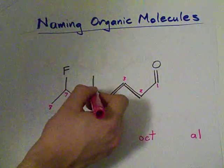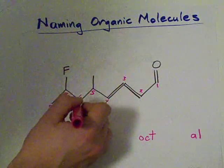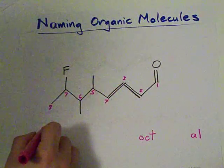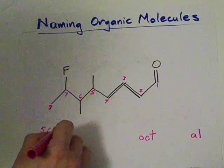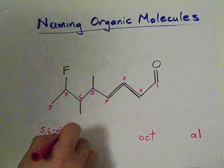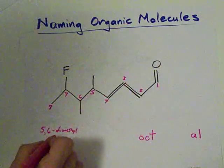Well, I've got a methyl on number five and a methyl on number six. So that to me is a 5,6-dimethyl. See? Two methyl groups.